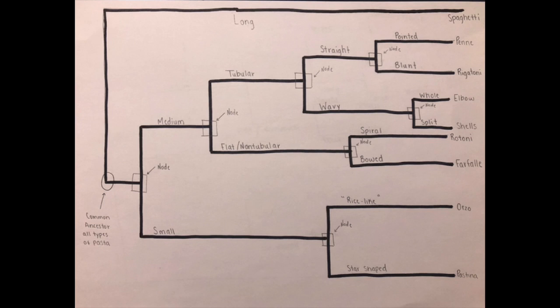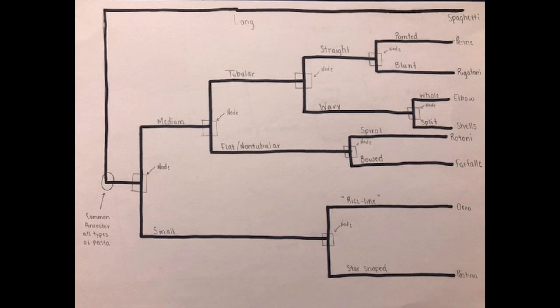Now looking at our phenotypic tree as a whole, we can clearly see all of our nodes, like internal nodes, where our branches diverge showing cladogenesis and our common ancestors. We can also see the lengths of our horizontal lines showing anagenesis and the relative amount of evolutionary time. For example, we can see that elbows and shells have been around for a shorter amount of time than rigatoni and penne because the horizontal line is shorter and it diverged later on from a common ancestor.